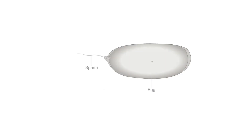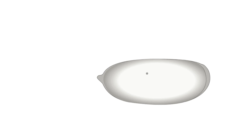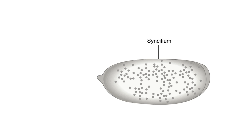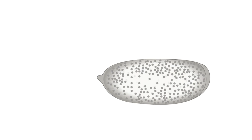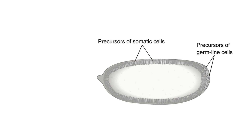At fertilization, the two parental nuclei migrate toward the center of the cell and fuse to form a diploid zygote nucleus. The nucleus undergoes several mitotic divisions without cytokinesis, producing a structure called a syncytium. Most of the nuclei migrate to the periphery of the egg and eventually lead to somatic cells, but a few migrate to the polar cytoplasm where they become precursors of germline cells.